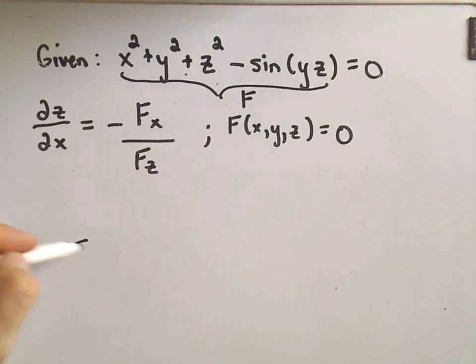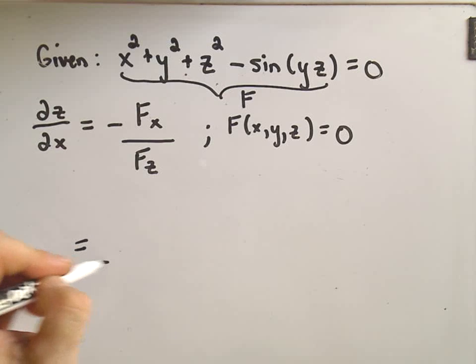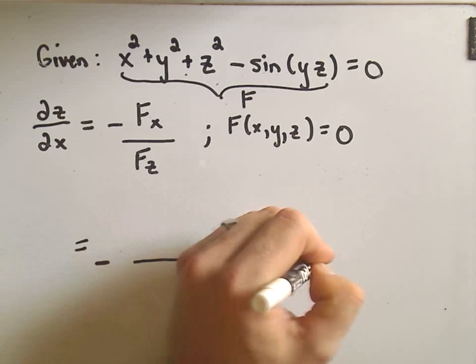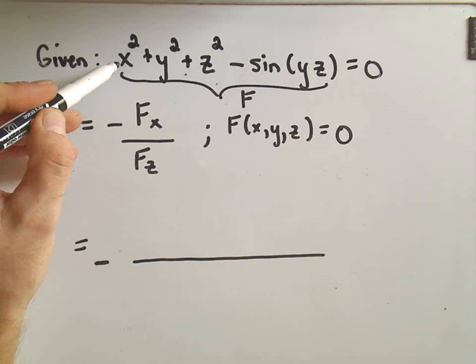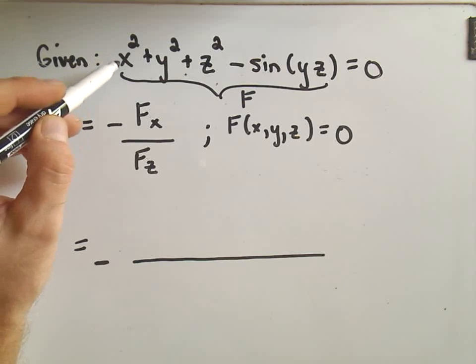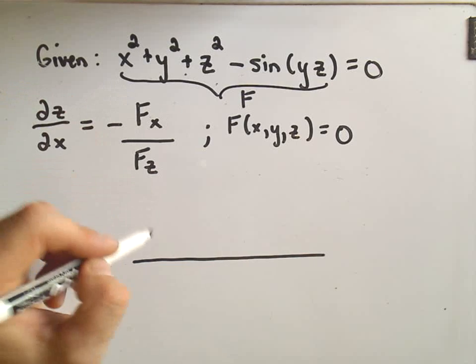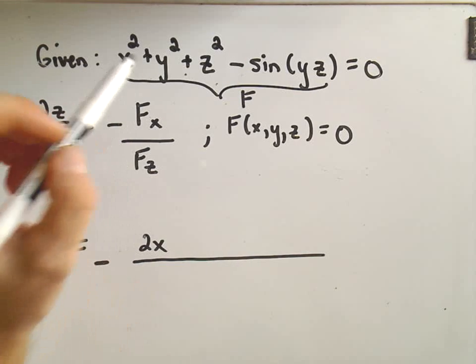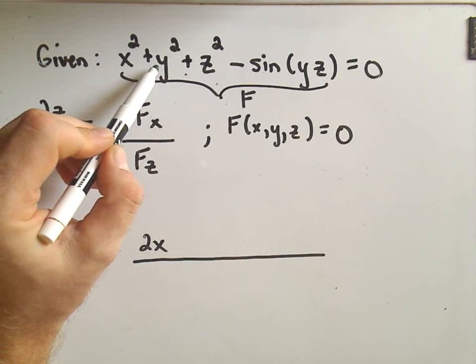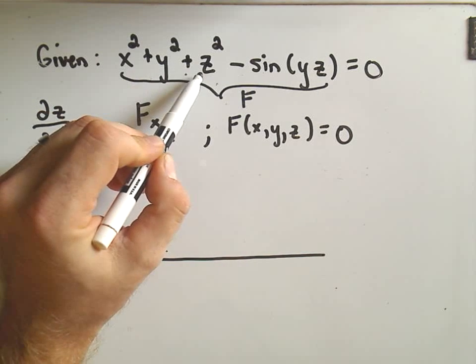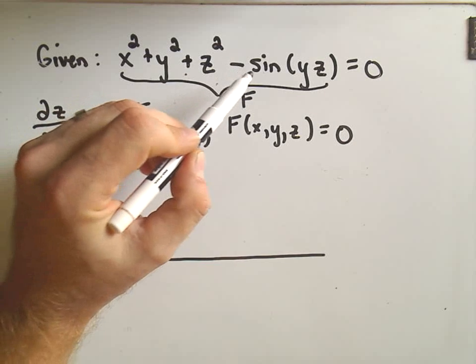So it says all you have to do to find the partial of z with respect to x, it says there's a negative in there. It says you take the partial derivative with respect to x. Well, the derivative with respect to x, the derivative of x squared with respect to x would just be 2x. Since now we'll treat y like a constant, so that becomes zero. We'll treat z like a constant, so that also becomes zero.